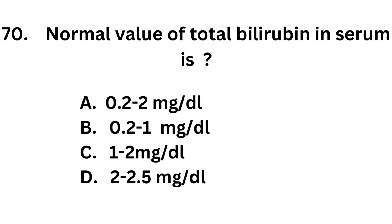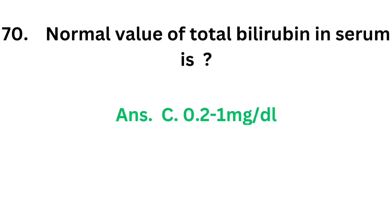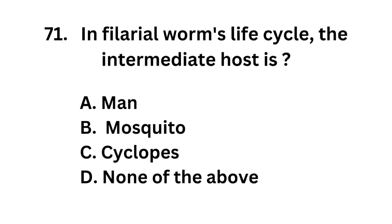Question number 70. Total bilirubin in serum is: Option A, 0.2 to 2 mg per deciliter; Option B, 0.2 to 1 mg per deciliter; Option C, 1 to 2 mg per deciliter; Option D, 2 to 2.5 mg per deciliter. The correct answer is Option B, 0.2 to 1 mg per deciliter. Normal value of total bilirubin in serum is 0.2 to 1 mg per deciliter.